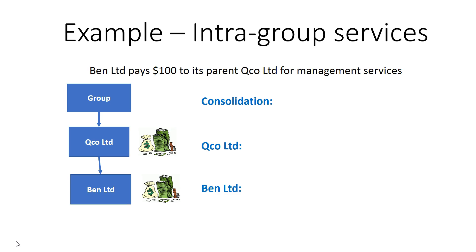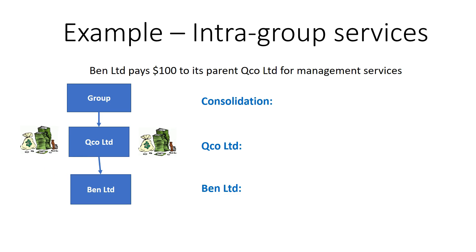First example: intergroup services. Ben Limited pays $100 to its parent Huco Limited for management services. If the pictures of money are worth $100 each, Huco Limited has $100, Ben Limited has $100, the group has $200 in total. When Ben Limited pays $100 to Huco Limited, Ben no longer has any money, Huco now has $200 — the group still has $200. There has been no net impact on the group's overall resources by this transaction, which is why we need to eliminate it.